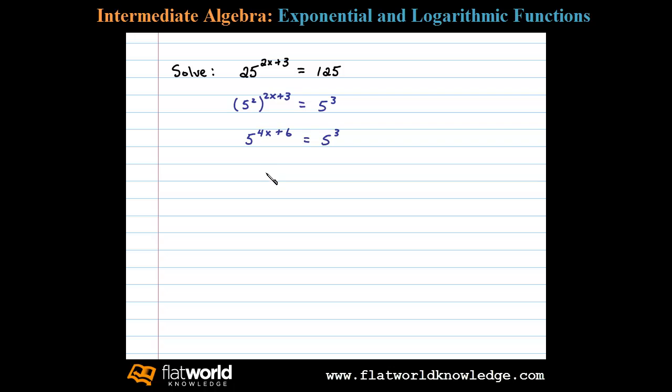Doing that, we have 4x plus 6 equals 3. Then solve this linear equation by subtracting 6 on both sides. That leaves us with 4x equals negative 3, or x equals negative 3/4.